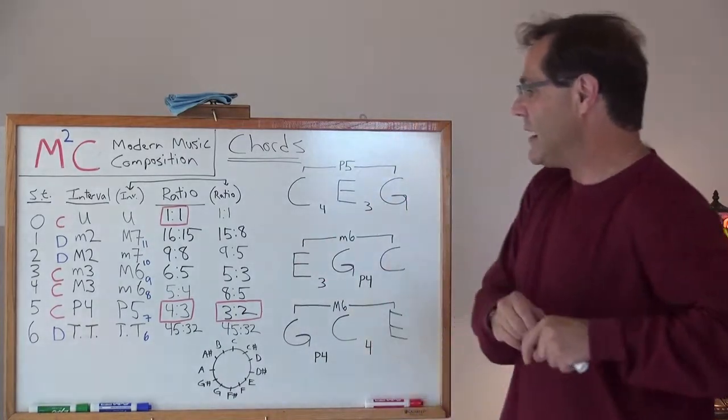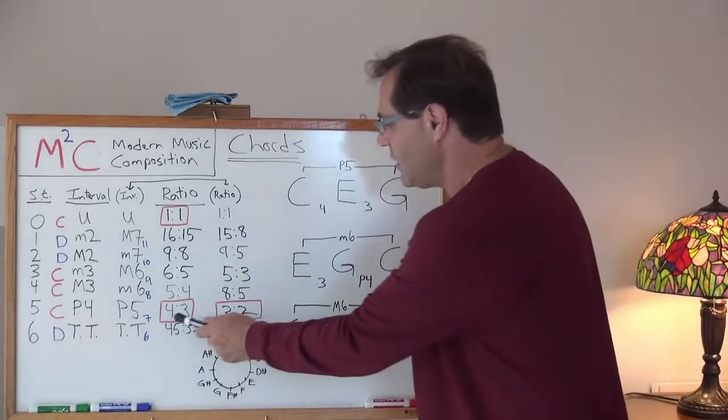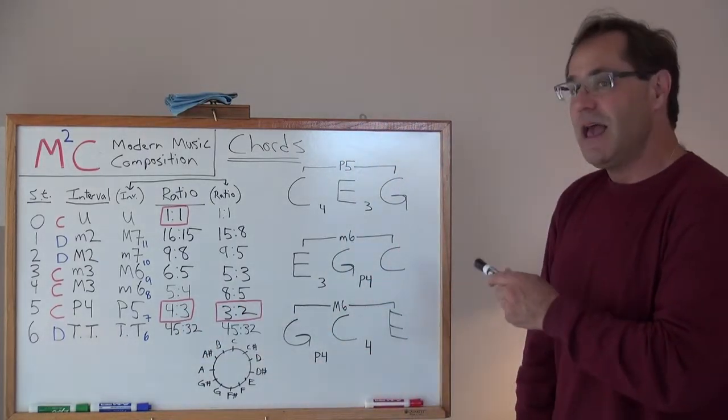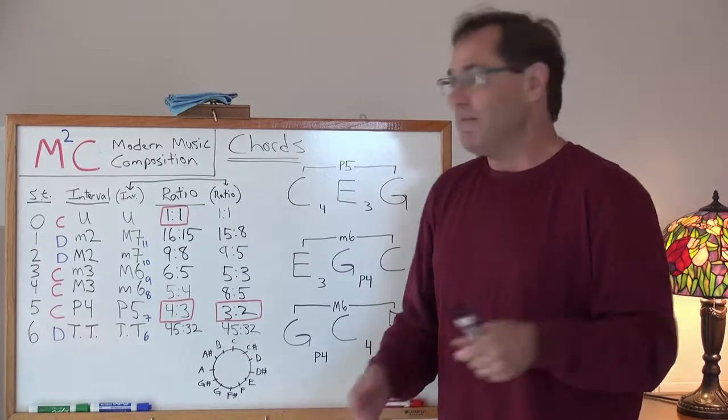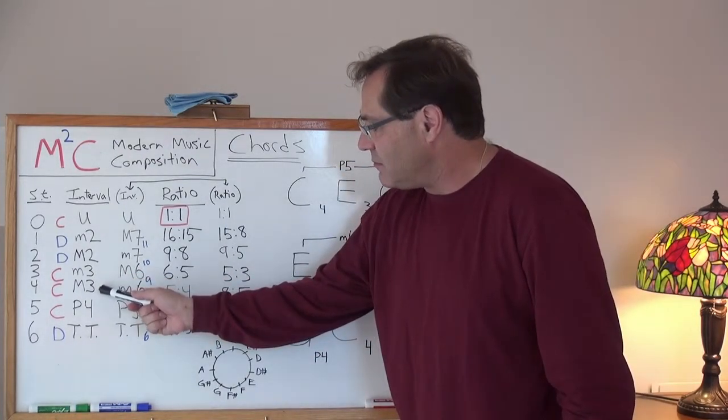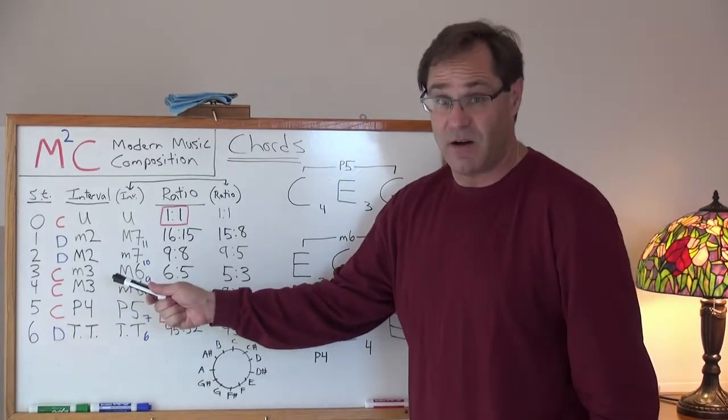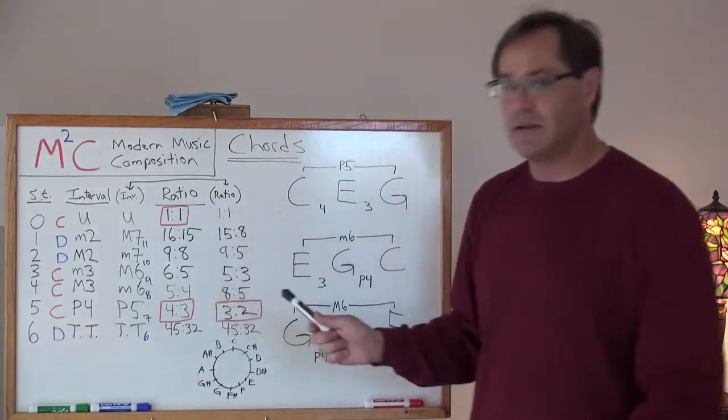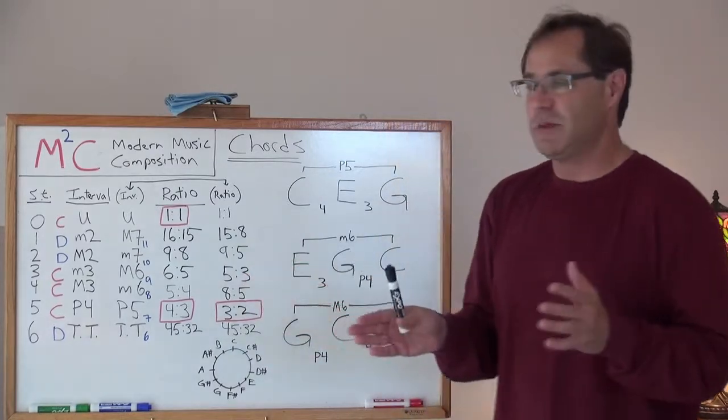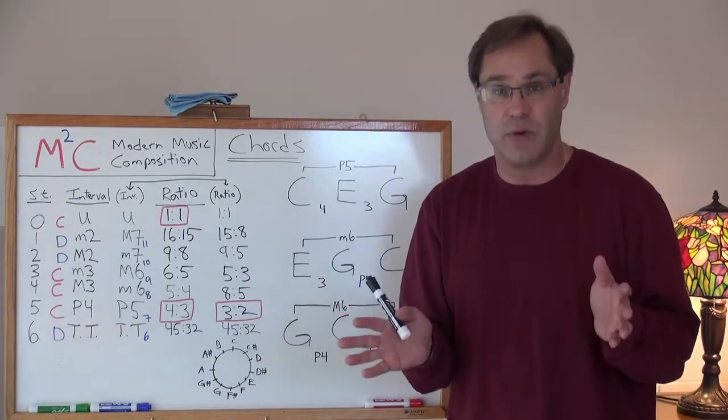The ratios that are blocked out in these red squares, that's what's considered a perfect consonance. Historically, what that means is that any ratio that started with the number of four or less is considered perfect. Minor thirds and major thirds are also consonant, but they're not considered perfect. They're called imperfect.